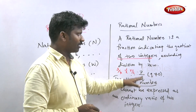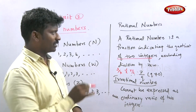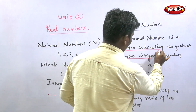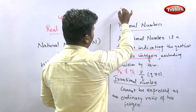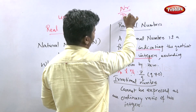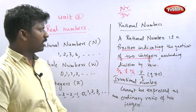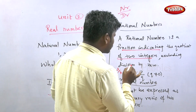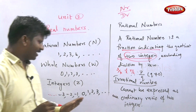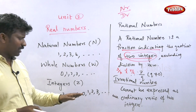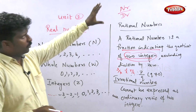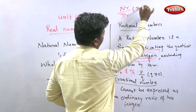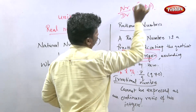So what is the key property of rational numbers? They are fractions indicating the quotient of two integers — having a numerator and denominator — where the denominator is particularly not equal to zero.